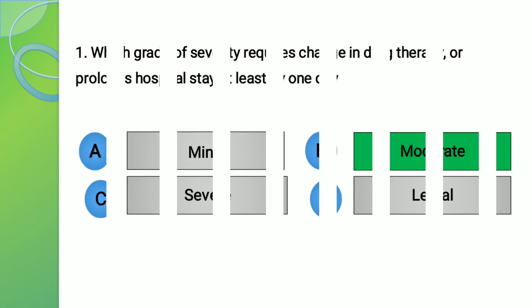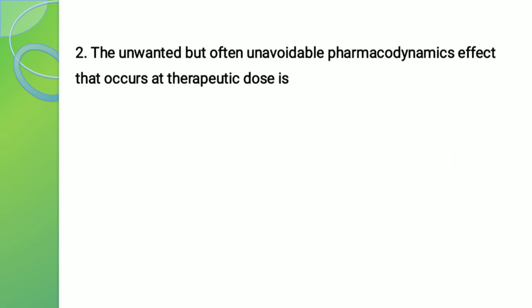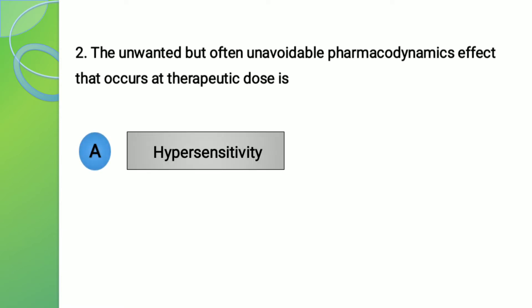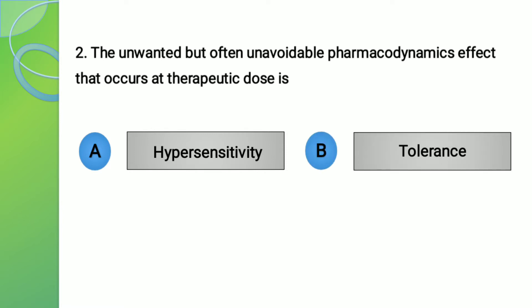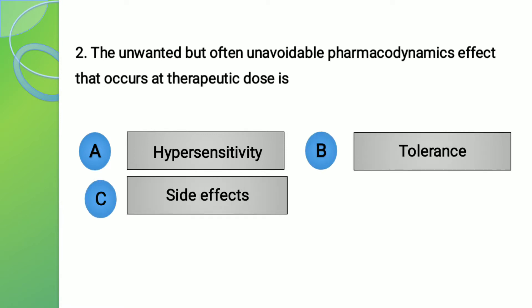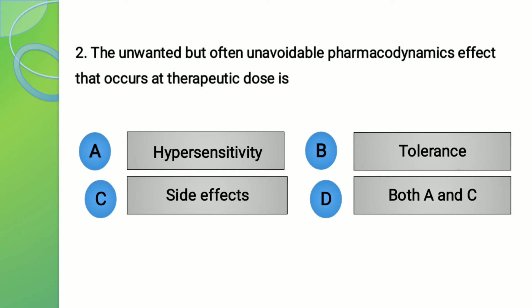Moving to question number 2. The question is: the unwanted but often unavoidable pharmacodynamic effect that occurs at therapeutic dose is? The options are: A - Hypersensitivity, B - Tolerance, C - Side effect, and D - Both A and C, that is hypersensitivity and side effect.